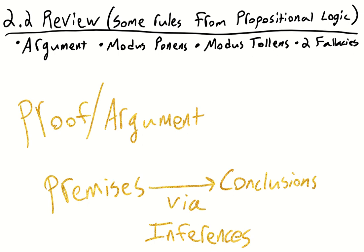An argument is simply where a proposition or set of propositions are being justified with evidence. And this, of course, is what a proof is doing. Moreover, it doesn't just make assertions — rather, it is giving evidence.